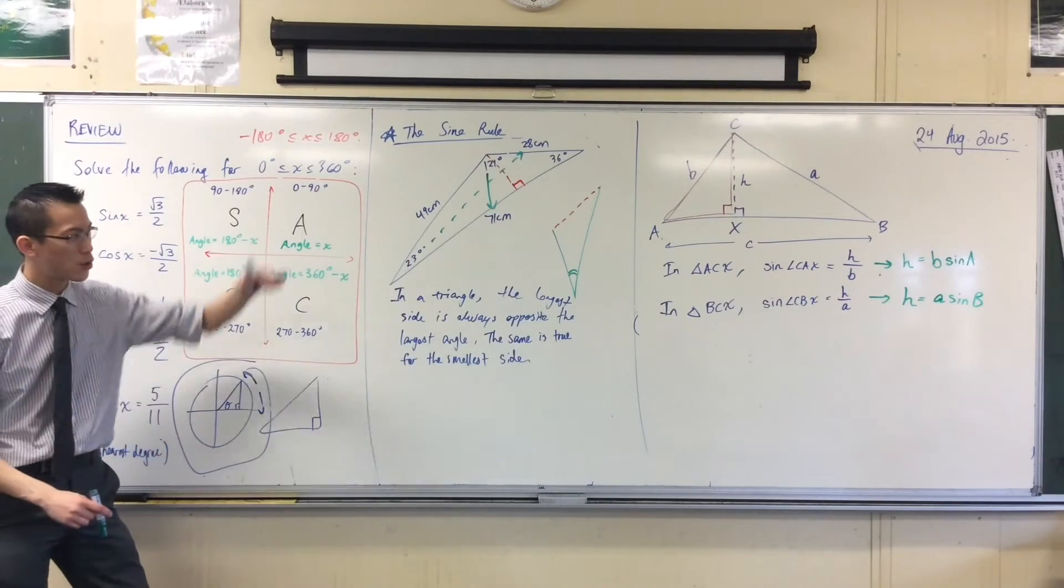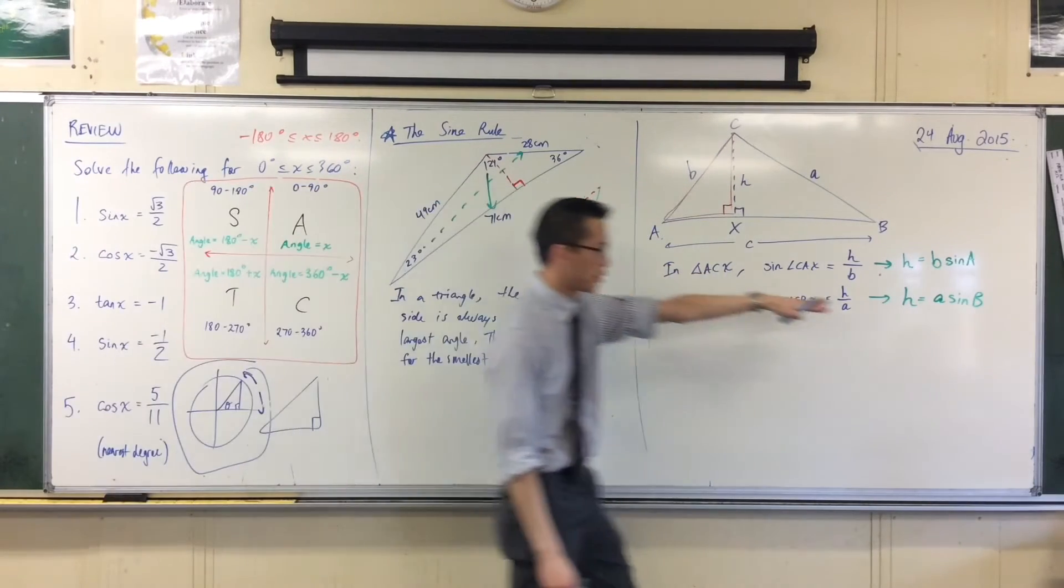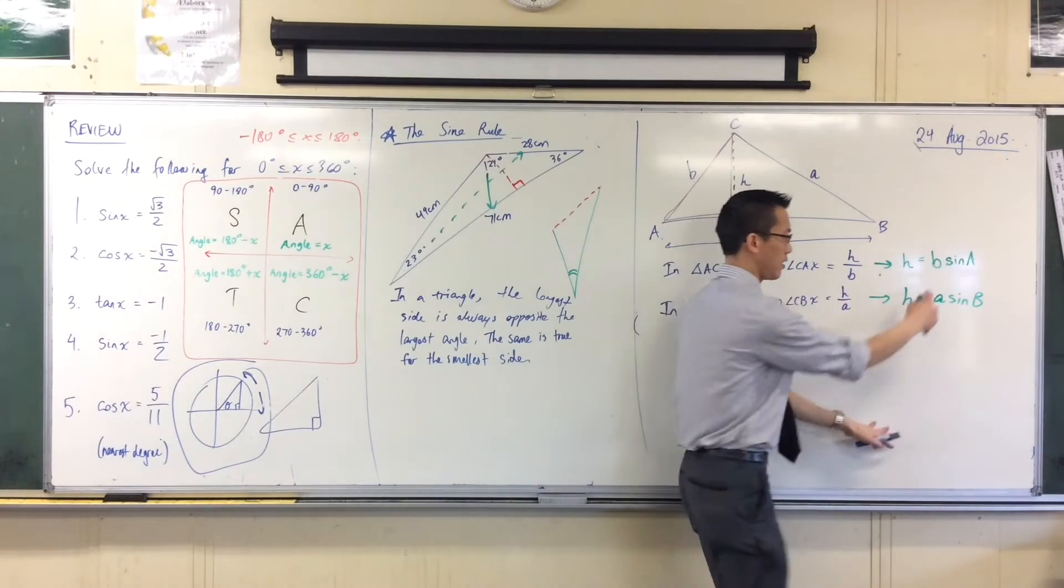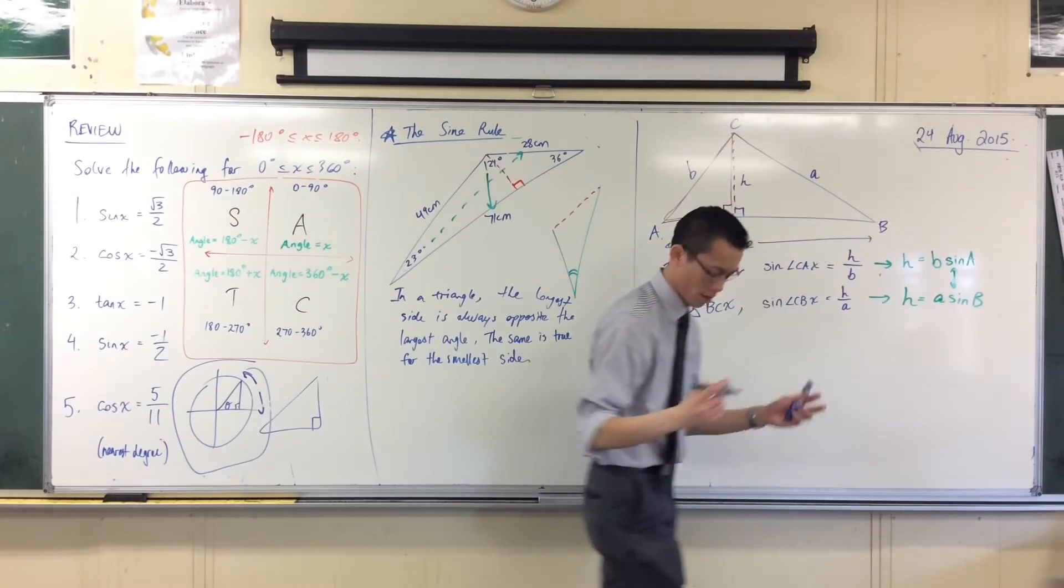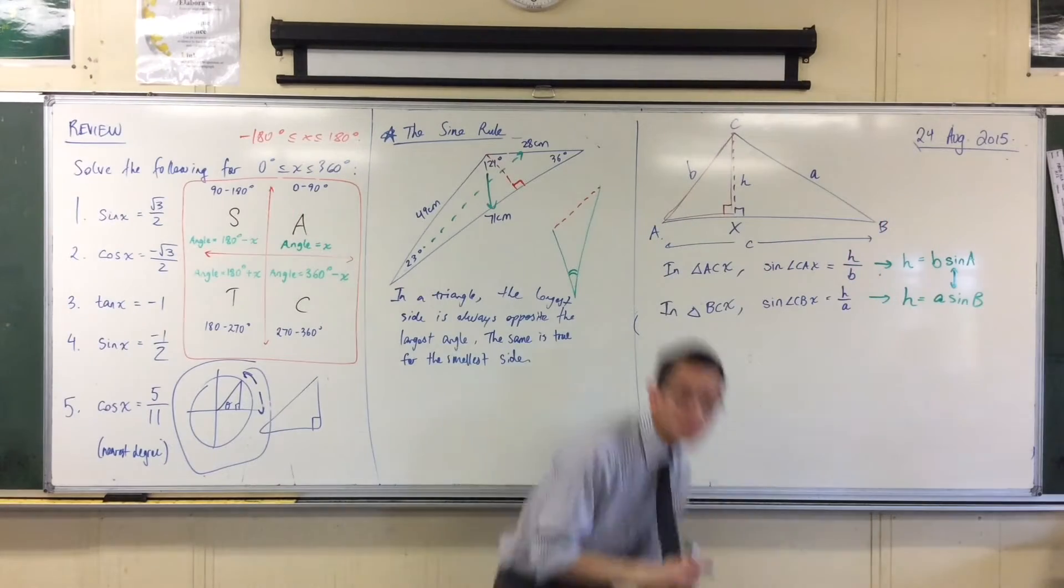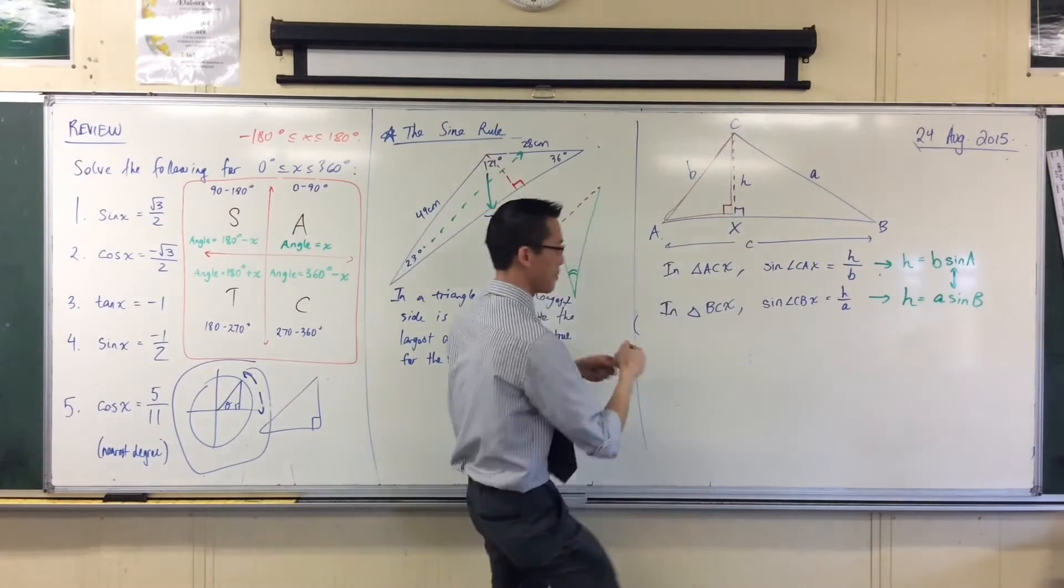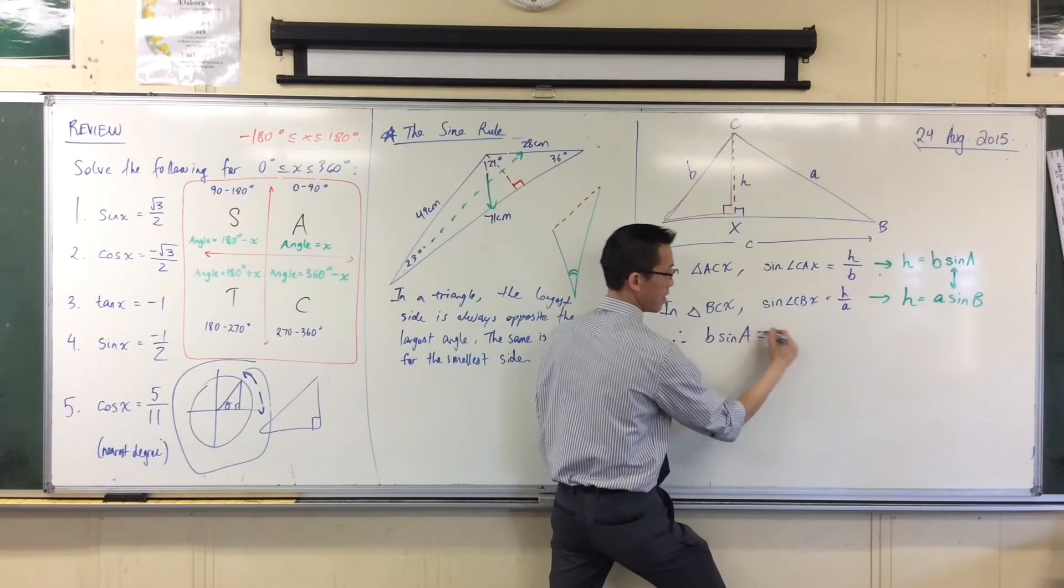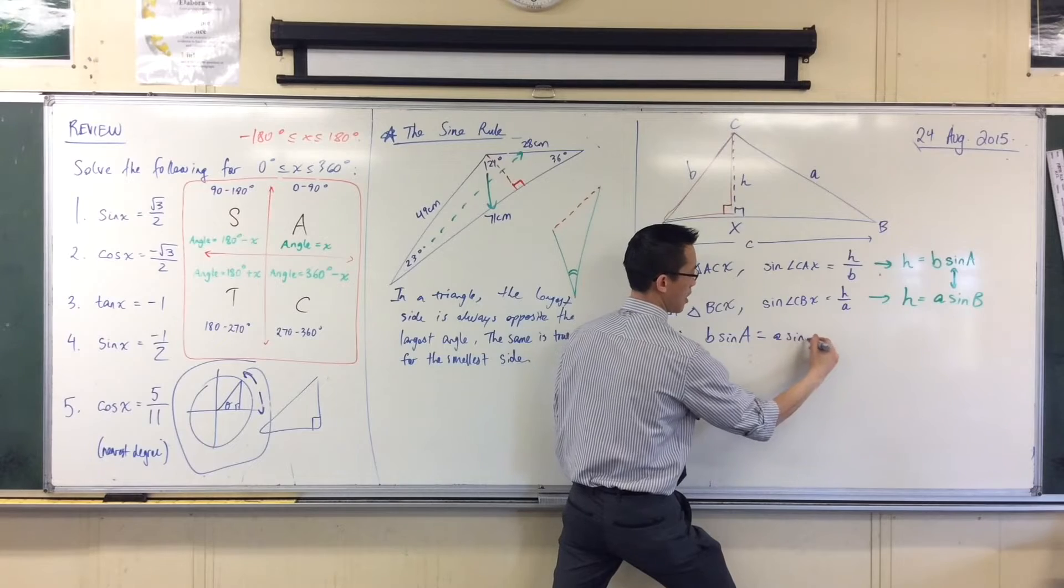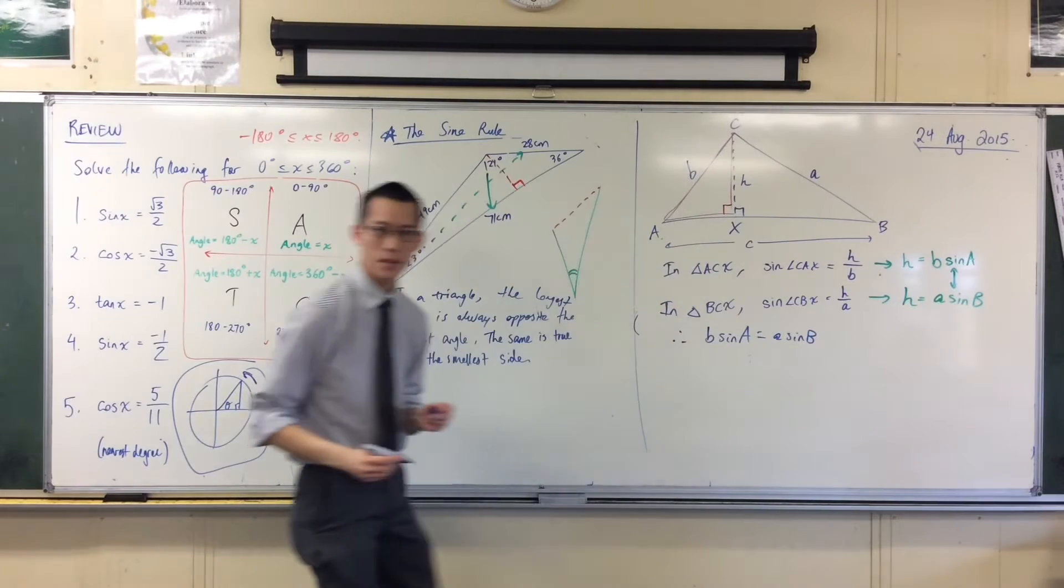Now, if h is equal to that top thing, and h is also equal to this bottom thing, then these two should be equal. If they're both h, then these two should be equal to each other. So therefore, that's what I'm going to say. I'm going to say, therefore, B sine A equals A sine B.